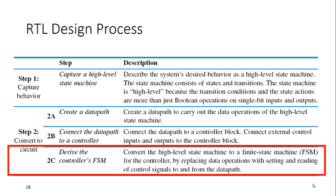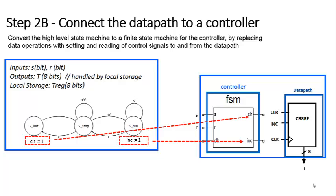Step 2C is to derive our controller's finite state machine. This is exactly what we did for the first two chapters of the book, so we know exactly how to do that. The first thing we want to do is change the names on our HLSM to the names that we need for our finite state machine. We need clear and increment to be our outputs. We want to set clear equal to 1 when we're in S_init.